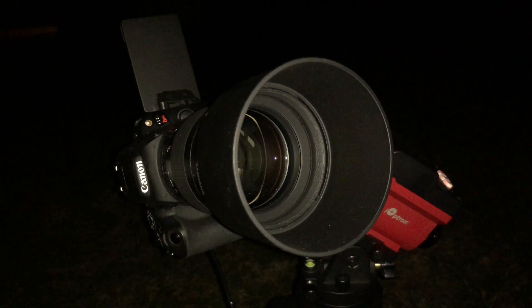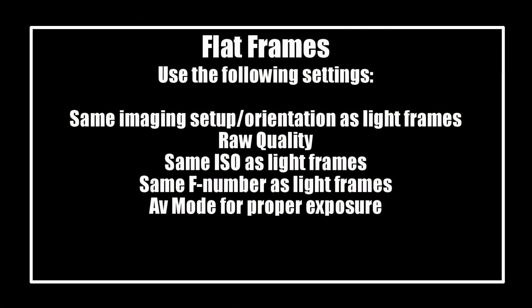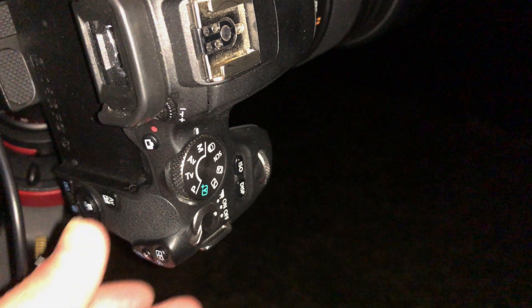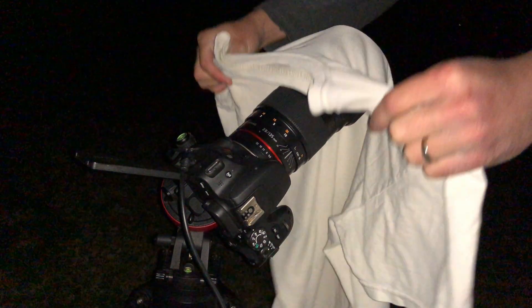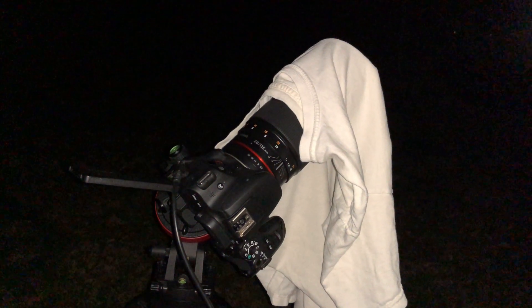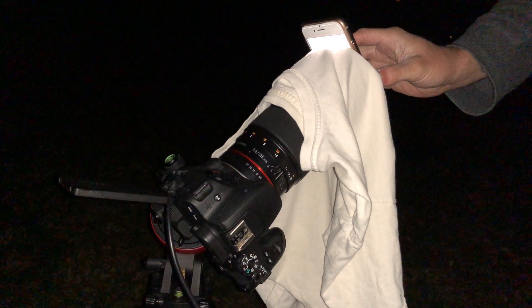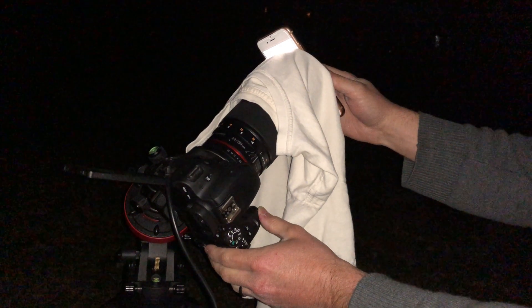To accomplish this, I like to use the incredibly sophisticated and expensive scientific instrument known as the white t-shirt. Begin by making sure your imaging setup is in the exact same orientation as it was for the light frames, and make sure you are still shooting in RAW quality with the same ISO and F number as before. The only thing you will want to change on the camera is the mode from manual to AV. Carefully stretch a white t-shirt over the lens hood making sure there are no wrinkles, then you're going to need a light source to evenly illuminate it. I like to use a white background on my iPhone with the brightness turned up to 100%. With both of those things in place, press the shutter button to take your flat frames.